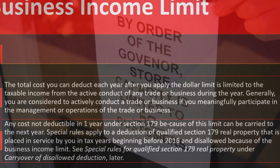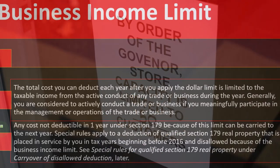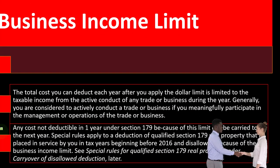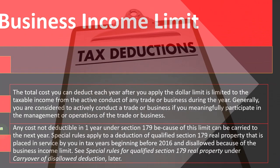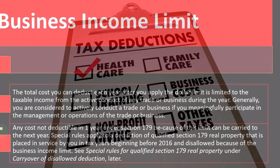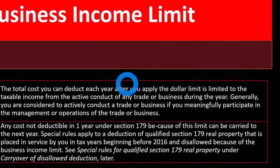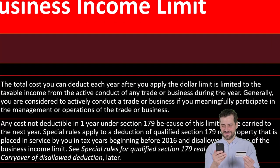Any cost not deductible in one year under Section 179 because of the business income limit can be carried to the next year. If you're limited in the current year, in following years you may take normal depreciation on the remaining basis — essentially a carryforward situation. You don't lose the deduction capacity; you're just limited by the income limitation, and the remaining basis is deducted under normal rules such as MACRS depreciation in future years.